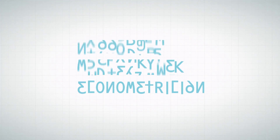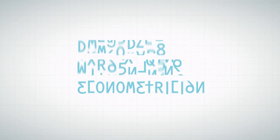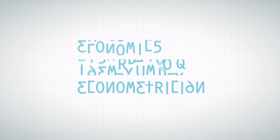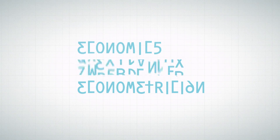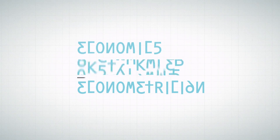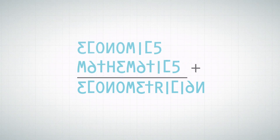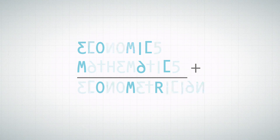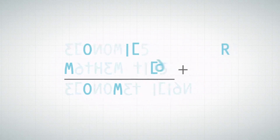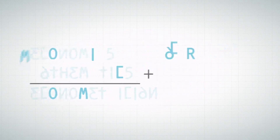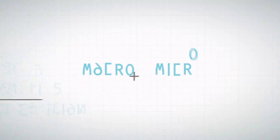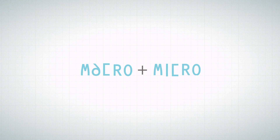An econometrician is someone who is interested in and knows about economic models, but he also knows his math. He likes to solve puzzles within the landscape of economic variables, both on a macro- and micro-economic level.